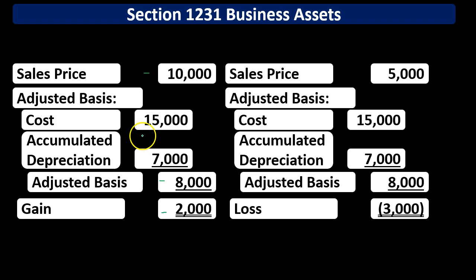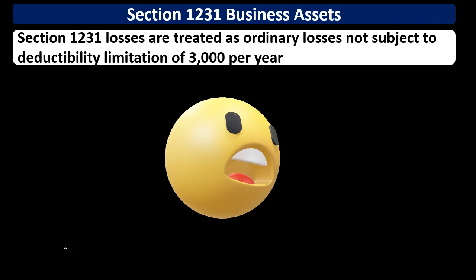Consider selling for $16,000: that $1,000 gain above the original cost is not subject to recapture and would be taxed at preferential rates. However, most equipment declines in value — unlike real estate — so gains typically result from over-depreciation rather than true appreciation. The tax code allowed that accelerated depreciation, but now requires recapture due to the difference between the ordinary income rate at which the deduction was taken and the lower capital gains rate that would otherwise apply.